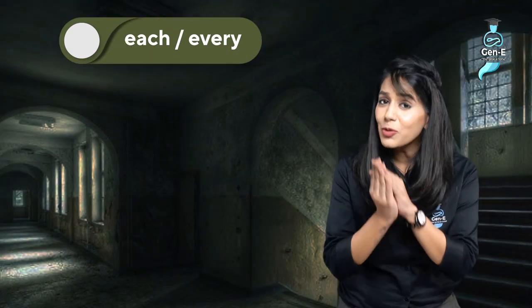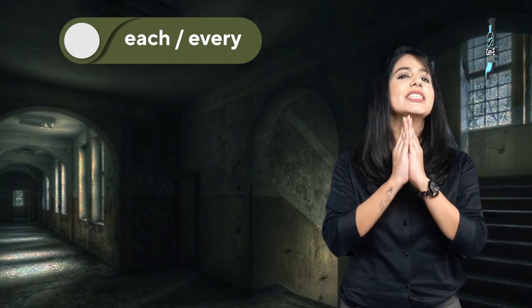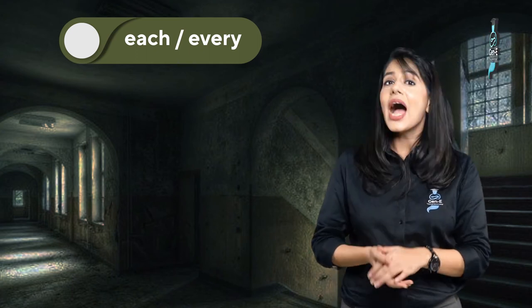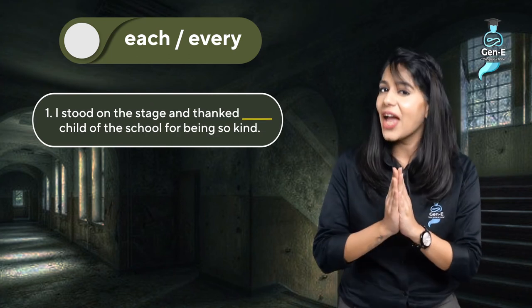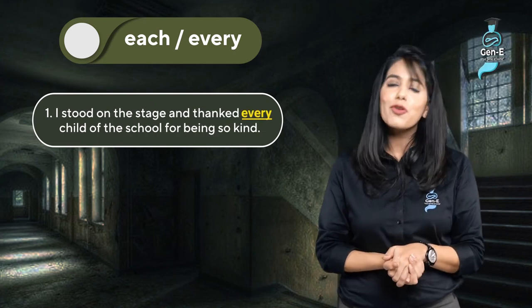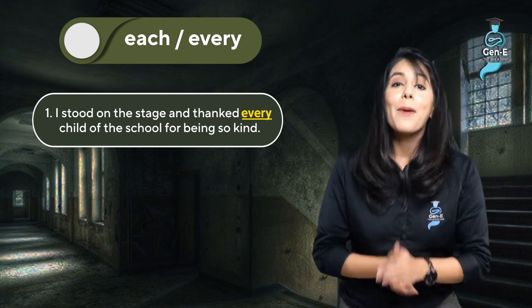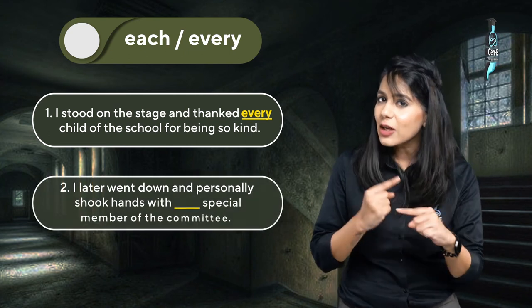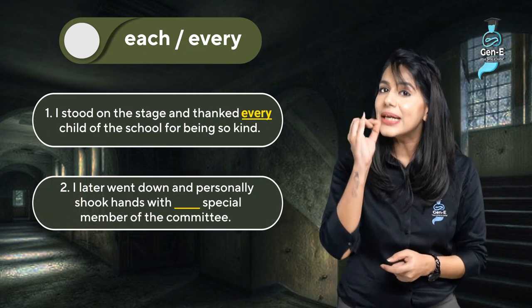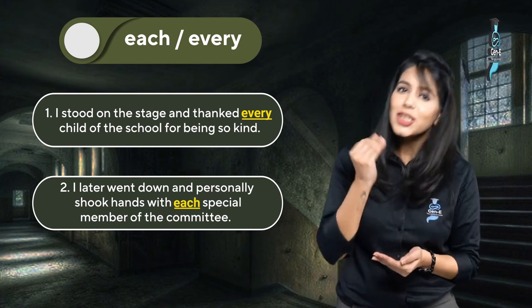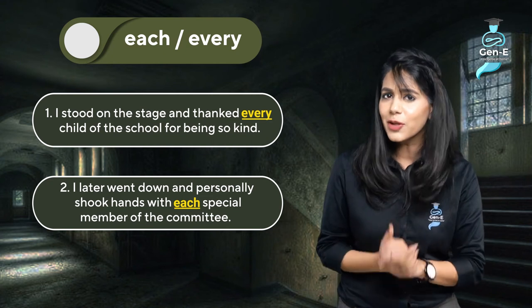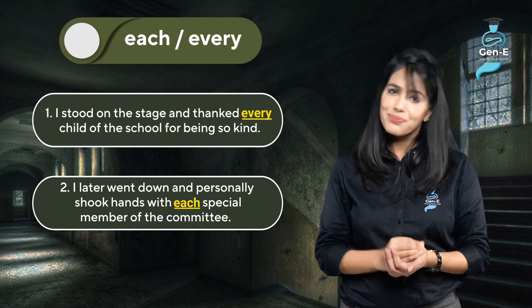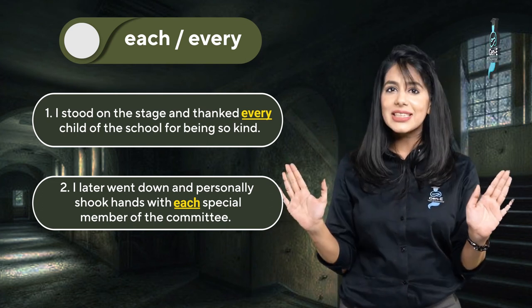समझ आया? अब चलते हैं उन दो sentences पे जो मैंने starting में तुम लोगों को दिये थे. पहला sentence: 'I stood on the stage and thanked every child of the school for being so kind.' Basically हमने इसमें collectively सारे बच्चों को thank किया. 'I later went down and personally shook hands with each special member of the committee.' Each क्यों? Because हर special member को personally जाके मिले. हो गया concept, clearly.